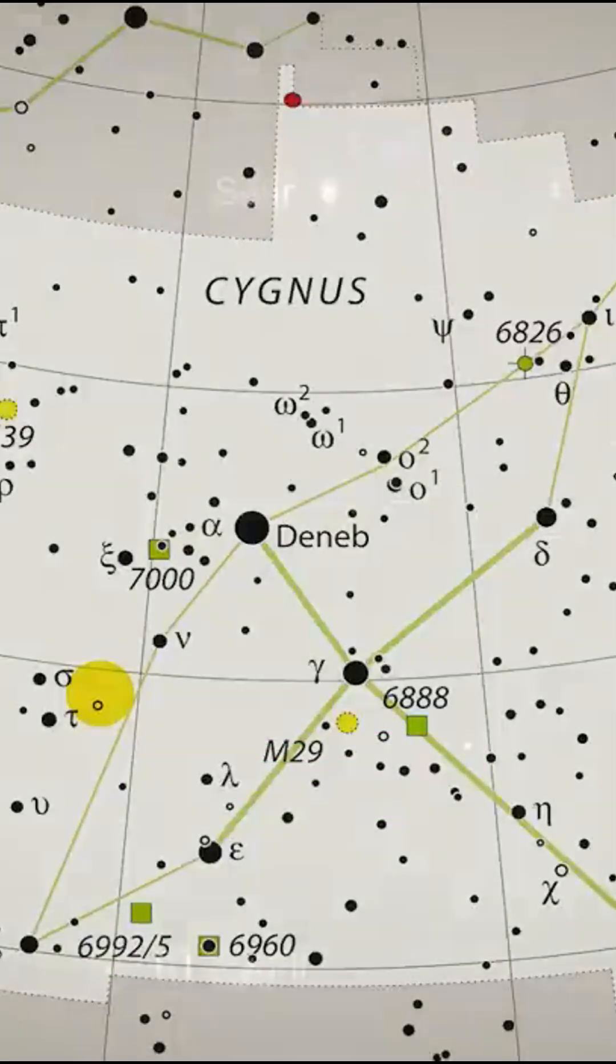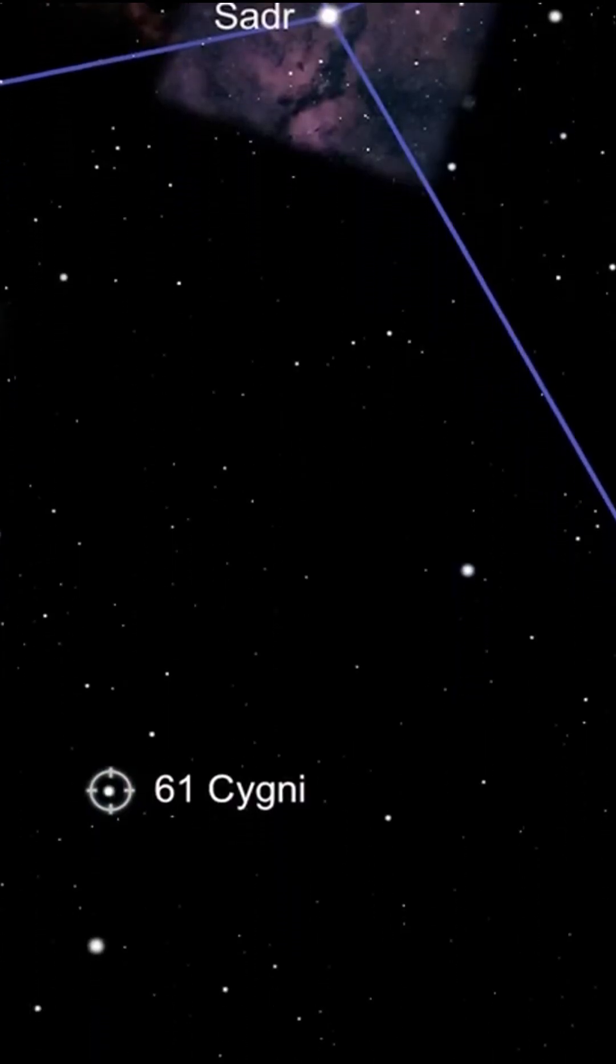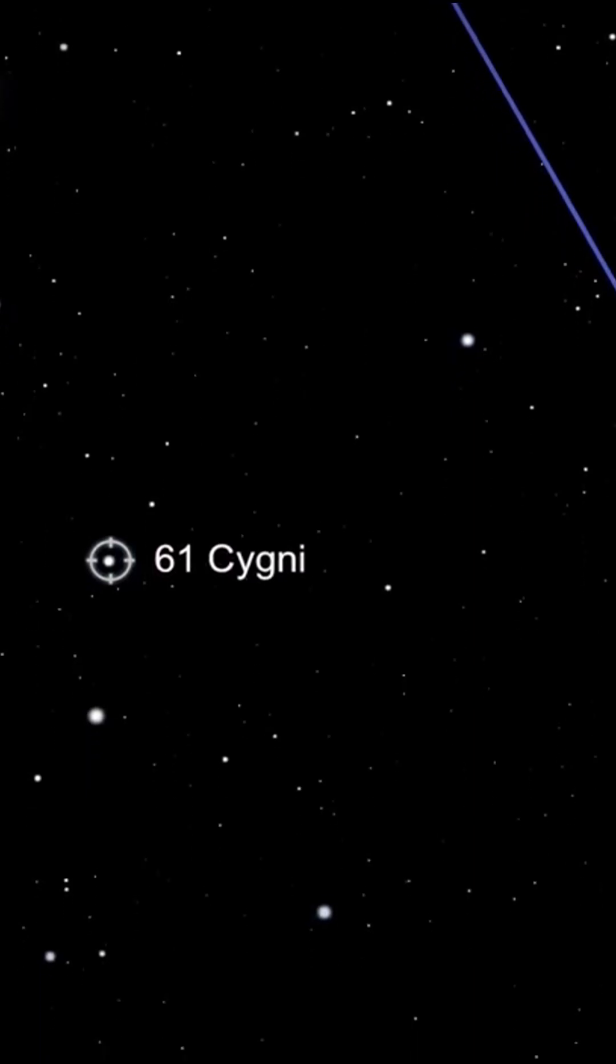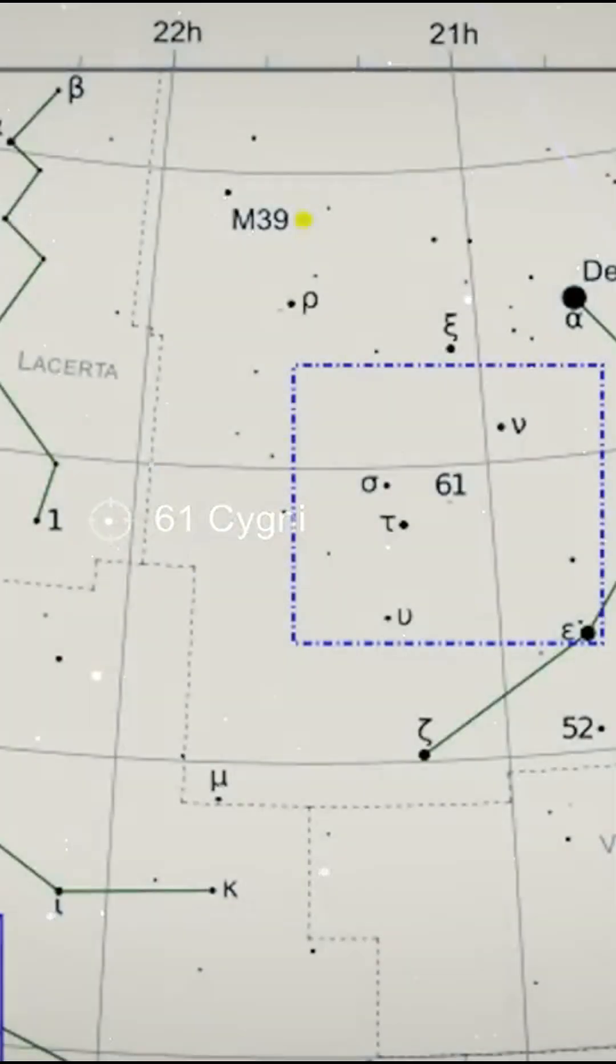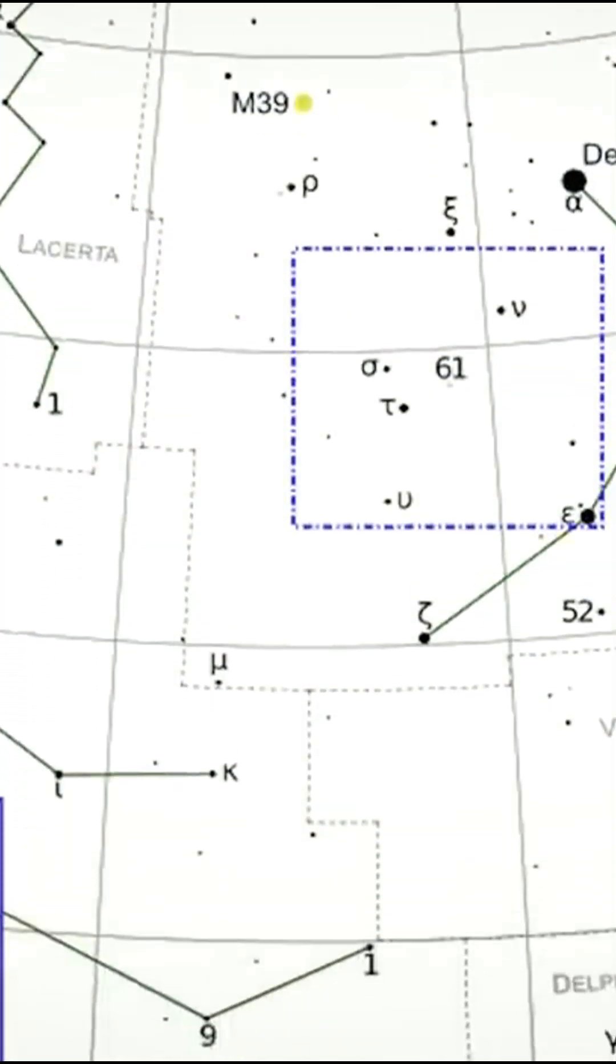It is characterized by its ultra-fast self-motion within our galaxy. With a magnitude of 5.2, it's easy to see with the naked eye under a clear sky.